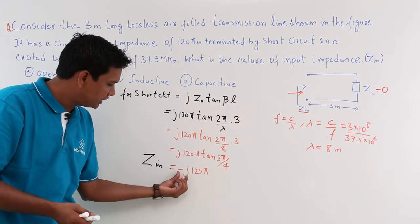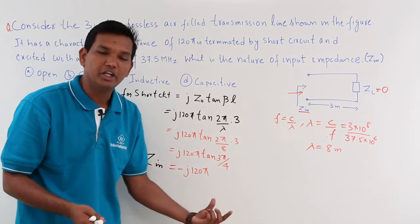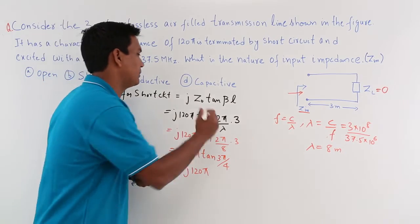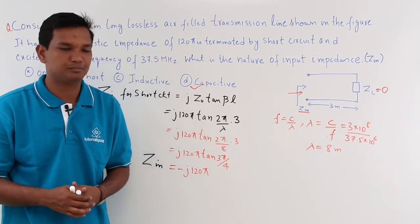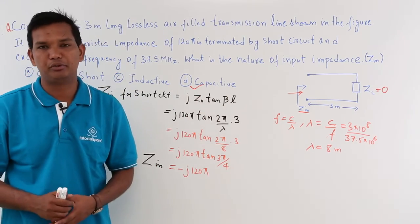Now if you observe, it is -j. The nature of the input impedance has -j. So for sure it is not inductive. The answer to this question is capacitive. The nature of input impedance is capacitive. So we have concluded the nature of input impedance.